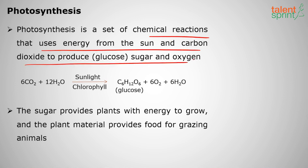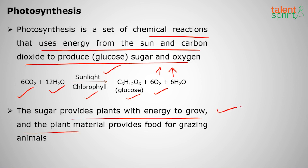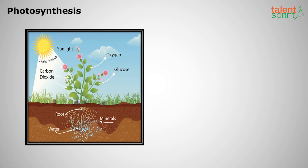Photosynthesis is a set of chemical reactions that uses energy from the sun and carbon dioxide to produce glucose (sugar) and oxygen. Carbon dioxide and water, in the presence of sunlight, are converted by chlorophyll into glucose. Oxygen is given out and water is also respired out. The sugar produced provides plants with energy to grow, and it is also useful for grazing animals.